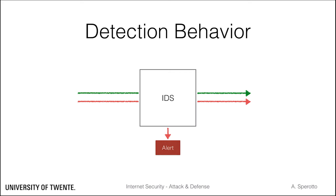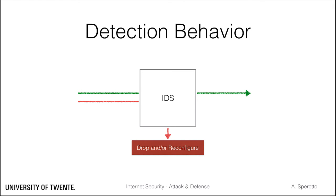Of course, this can easily become a time-costly operation. An IDS can also take other types of actions, such as dropping malicious traffic or reconfiguring security appliances. For example, an IDS might instruct the firewall to block traffic from a certain malicious host. If the IDS takes action when it detects malicious traffic, it is then often called an intrusion prevention system, or IPS.